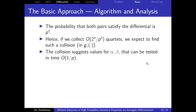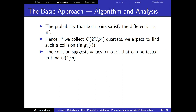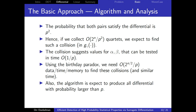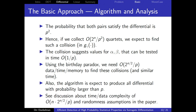The probability of this event is p². So we collect 2^n / p² quartets for a random gamma — just compute random derivatives in a random direction. Each collision also offers values for alpha and beta which we then verify. We can use the birthday paradox: collect many pairs and find a square-root number of quartets. The data, time, and memory required is about 2^(n/2) / p. For a 64-bit block cipher, this is actually feasible, and the algorithm produces all differentials with probability p.